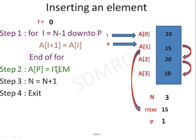After this, I execute step number 3: n = n + 1. Because initially I had 3 elements, now I have 4 elements, so it has to be incremented. n becomes 3 + 1 = 4. If you display the array, it has to display all elements from index 0 to n minus 1, that is 3. Step number 4: Exit. The insertion is done.